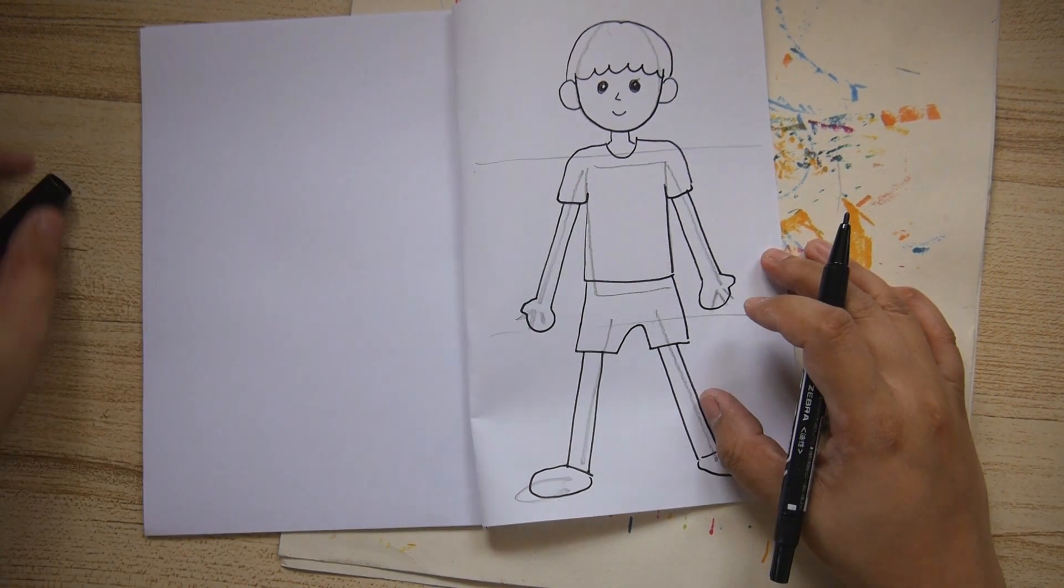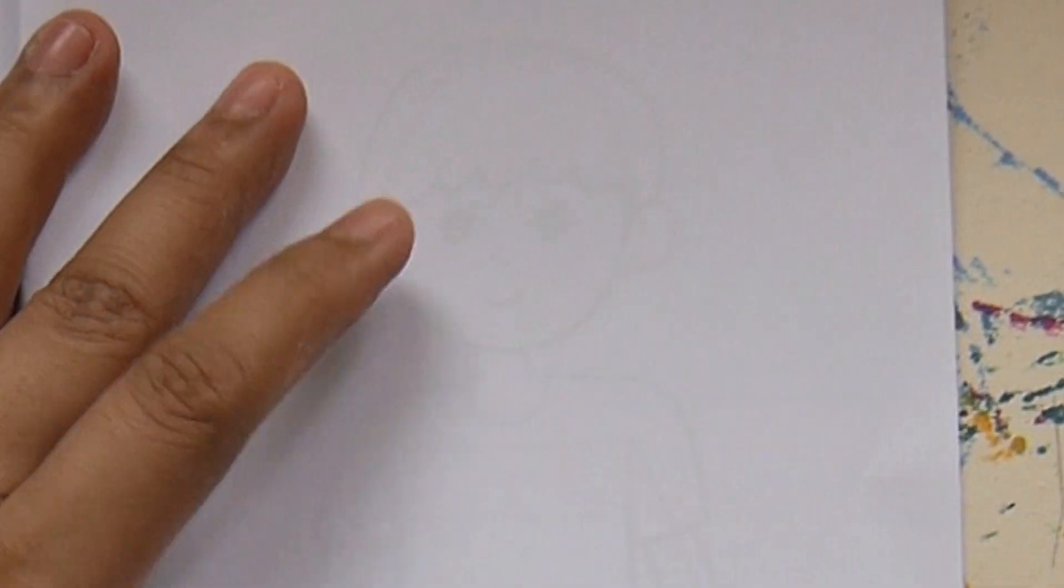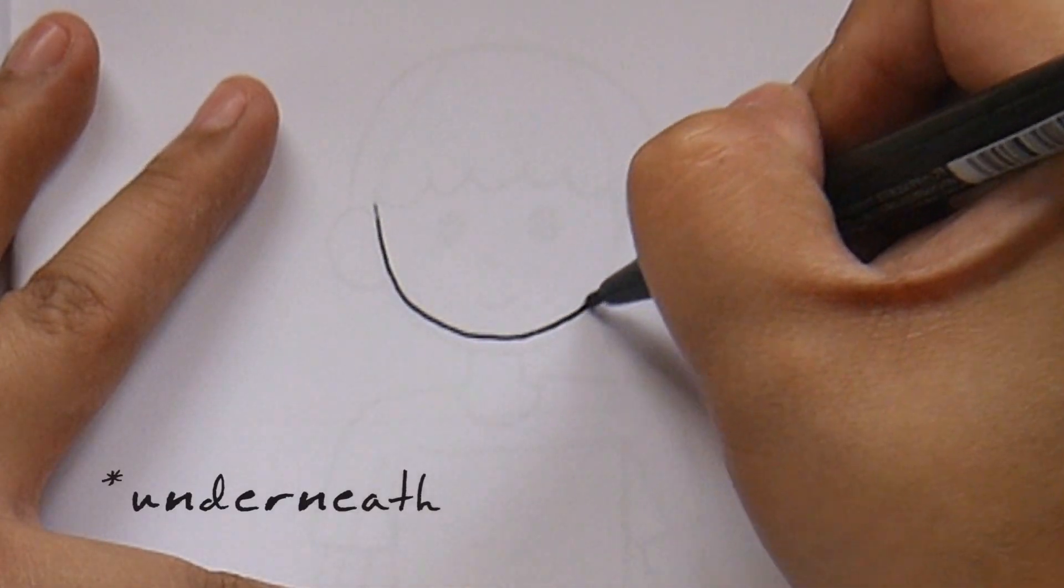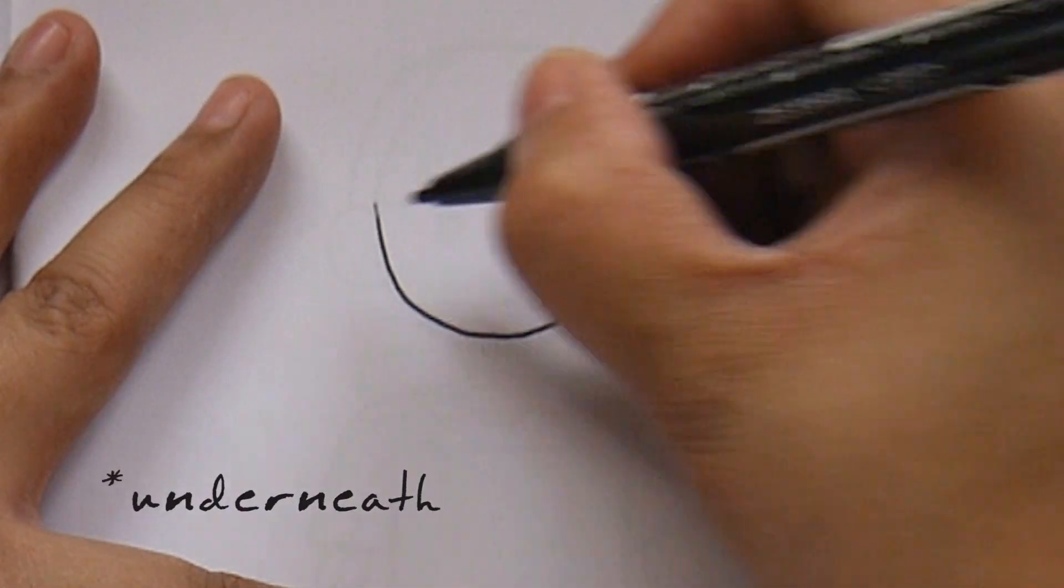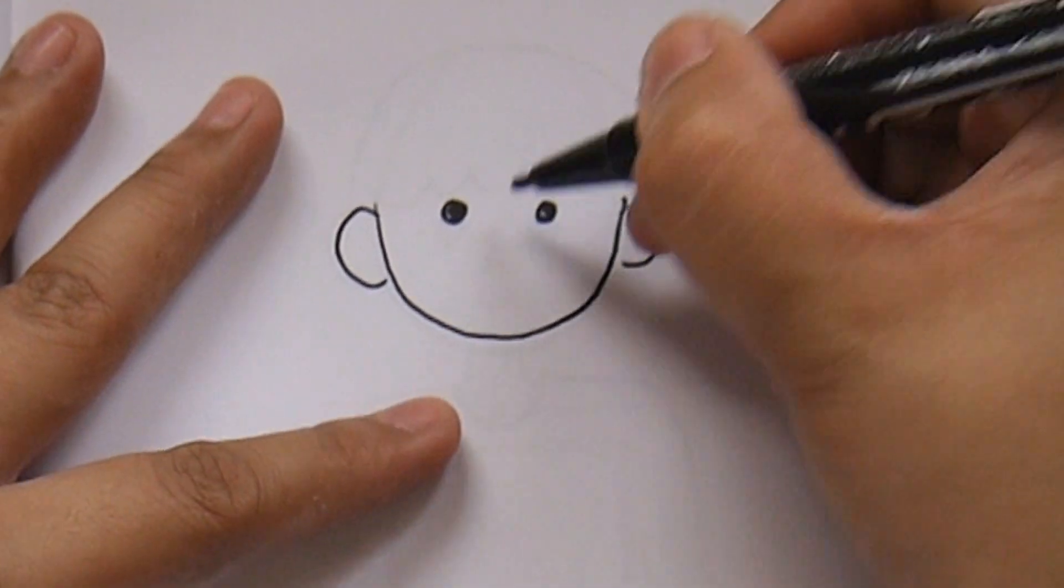Now, you're going to have to repeat the exact same thing. You have to trace the exact same boy. And to do this, well, just trace what you see from the bottom of your paper. I'm just tracing the lines from the other paper.